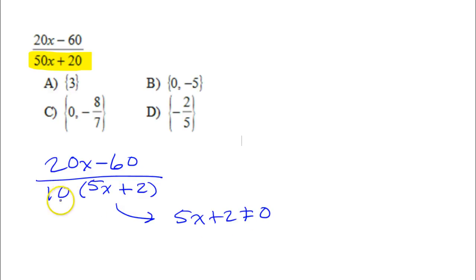So you don't have to worry about the 10, that's a constant. There's no way that's going to be 0. So we just have to worry about the 5x plus 2 not equaling 0. If I subtract 2 from both sides, that tells me that 5x cannot equal negative 2.